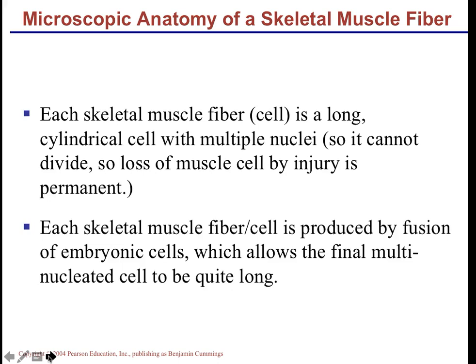Skeletal muscle cells are very long because during embryonic development many individual cells fuse together to make one very long cell. Every skeletal muscle fiber is produced by this fusion of embryonic cells, resulting in a multi-nucleated cell. Because of the multiple nuclei, coordinating mitosis is impossible, so if a muscle cell is lost due to injury it is permanent — it cannot be replaced. Remaining cells can increase in diameter, but the lost fiber is gone forever.